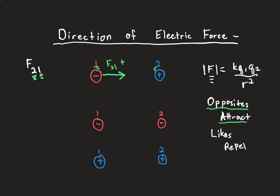Conversely, for the force of charge 1 on charge 2, I want to know where charge 2 is going to go because of charge 1. It's also going to be attractive, so the second charge moves towards the first charge — but now that's to the left. The force of 1 on 2 is going to be negative. This goes back to Newton's Third Law from physics 1: every force has an equal and opposite force. We can do this for any pair of charges.